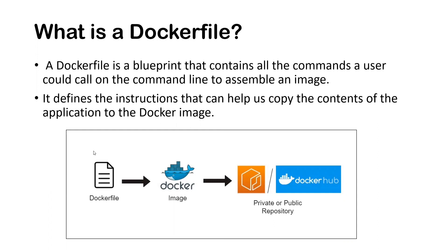Basically, a Dockerfile is nothing but a blueprint or template that contains all the commands a user could call on the command line to assemble an image. Whenever we dockerize an application, we require a Dockerfile. Within it, we mention the instructions that help us create a Docker image. We copy the contents of our application — artifacts, jar files, or whatever — into the Docker image. With the help of a Dockerfile, we create a Docker image, which can then be stored in any private or public repository.